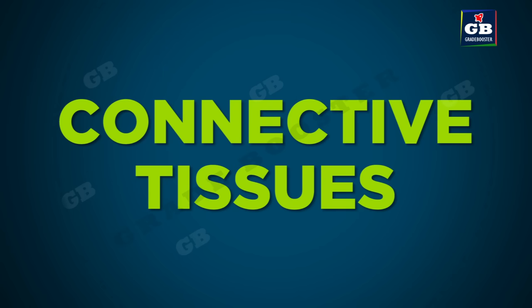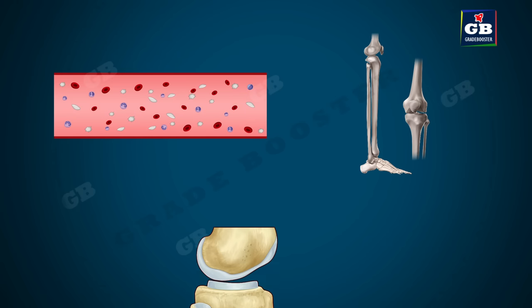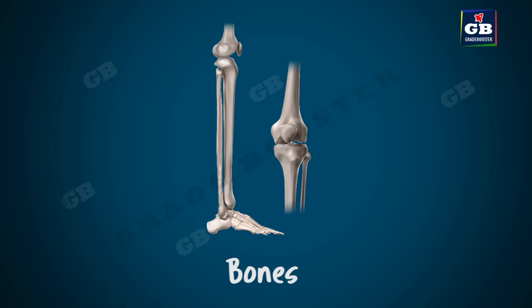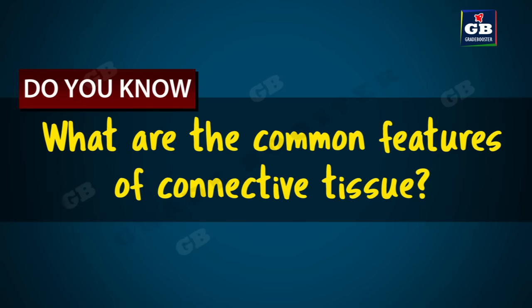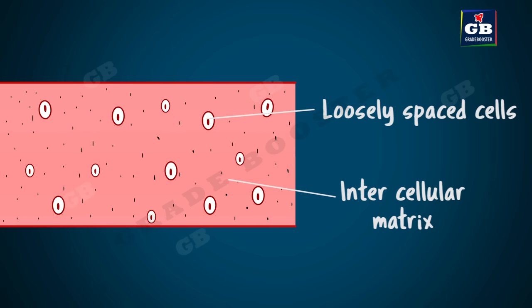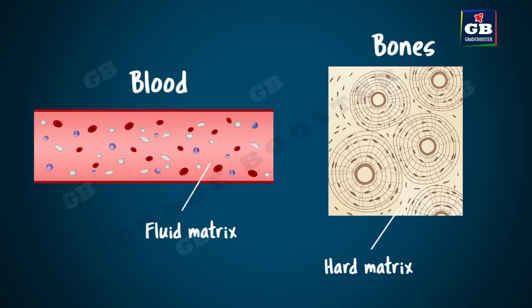Now let us learn about connective tissues. The tissue that connects different tissues or organs and gives structure to other tissues and organs is called connective tissue. Blood, bones, and cartilage are examples of connective tissue. Blood is a fluid connective tissue that connects different parts of the body. Bone is a connective tissue that gives shape and support to the body. The cells of connective tissue are loosely spaced and embedded in an intracellular matrix. The matrix of blood is like a fluid, whereas the matrix of bone is very hard.